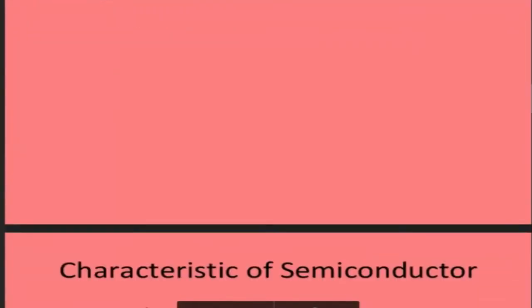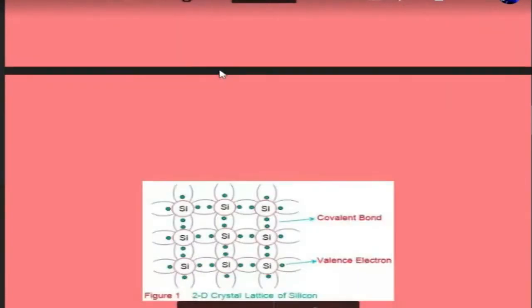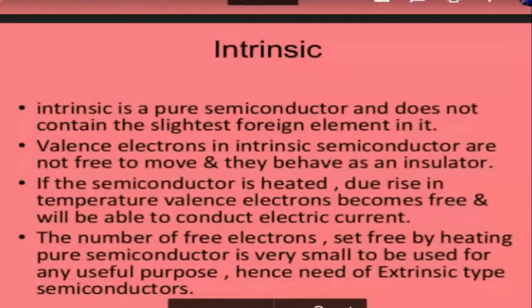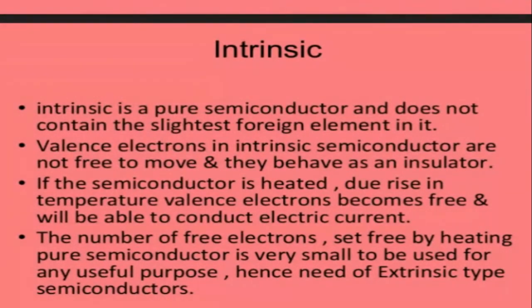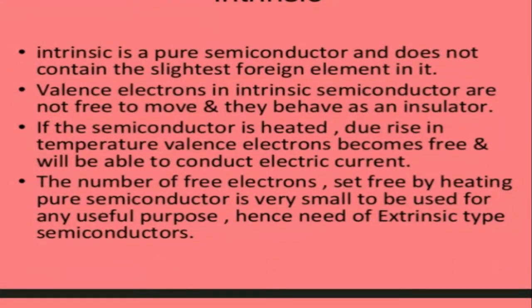Now let's look at the types of semiconductor. The first type is intrinsic semiconductor and the second is extrinsic semiconductor. Intrinsic semiconductor means it is a pure form of semiconductor — no impurity is added. It does not have any foreign element. If it is silicon, it will be 100% silicon; if it is germanium, it will be 100% germanium.